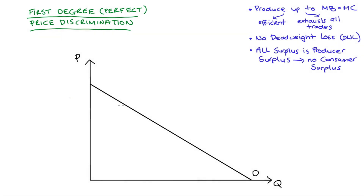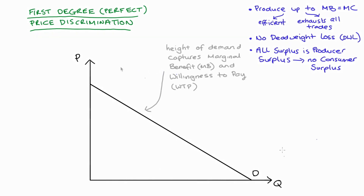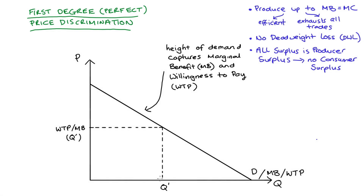Our price discriminating firm faces a downward sloping demand curve, and what's important to know about our demand curve when thinking about price discrimination is that demand tracks the marginal benefit of consumption and also our willingness to pay, which is WTP. Willingness to pay is the highest amount that a consumer will pay for a particular unit of a good, and it represents the maximum possible price that a unit can be sold for. So for any unit Q', I can find the marginal benefit and the maximum willingness to pay just by taking the height of our demand curve.